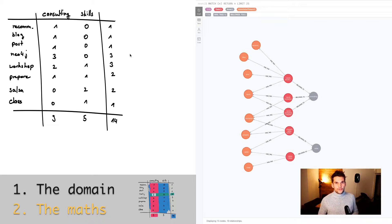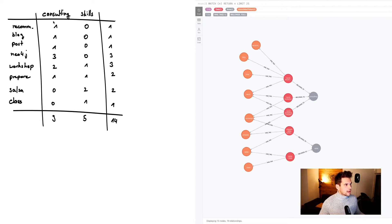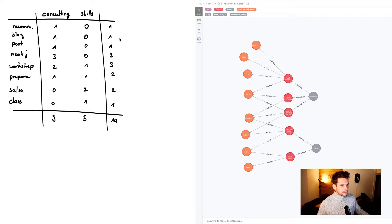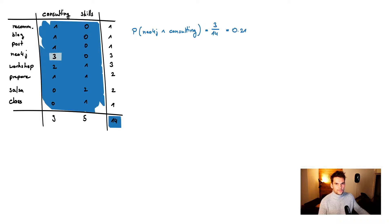Now let's look at how the Naive Bayesian classifier works. From our example we can easily construct an assignment matrix. In the columns we have the areas — consulting and skills — and in the rows we have the tokens. The numbers in the middle are the assignments of tokens to areas. For example, the token 'Neo4j' is assigned three times to the area 'consulting' but zero times to 'skills'. In total the area 'consulting' has nine assignments out of a total of 14.